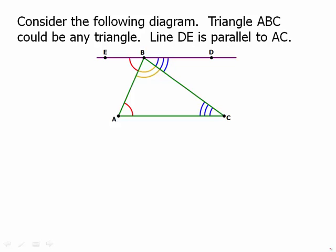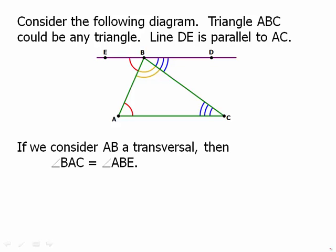So, remember what we talked about in the last video when we have parallel lines and a transversal cutting across those parallel lines. Well, if we consider AB a transversal, then those two red angles, BAC and ABE, those two red angles are equal. Those are congruent angles there.